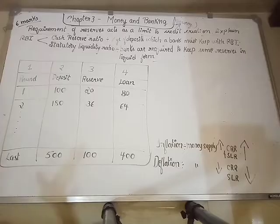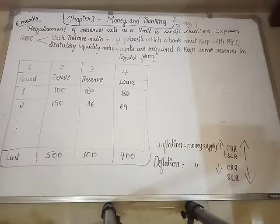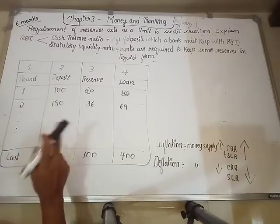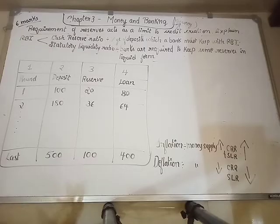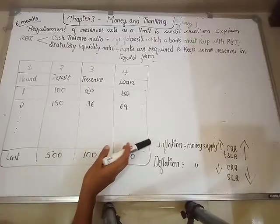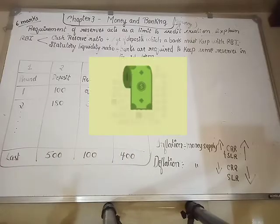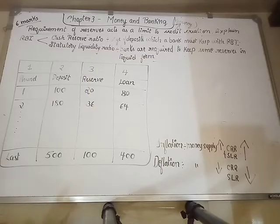The question is: the requirement of reserves acts as a limit to credit or money creation. The question is: how does this happen? This is the key exam question being addressed in this chapter.